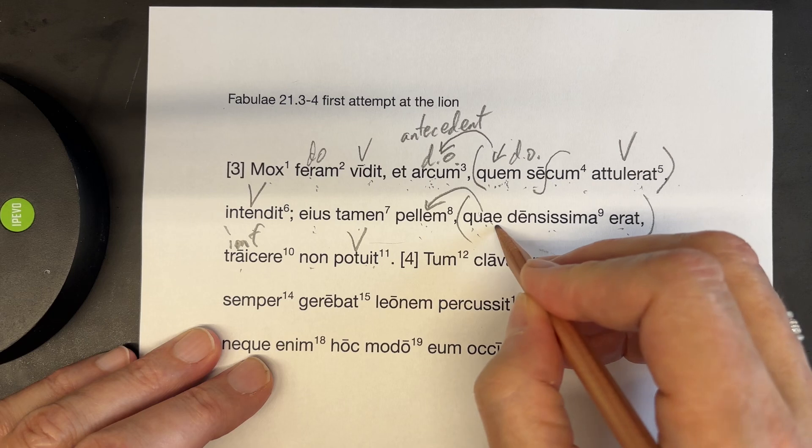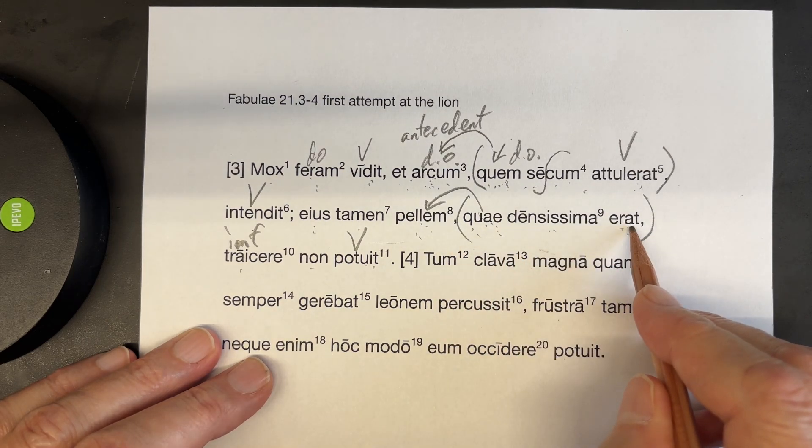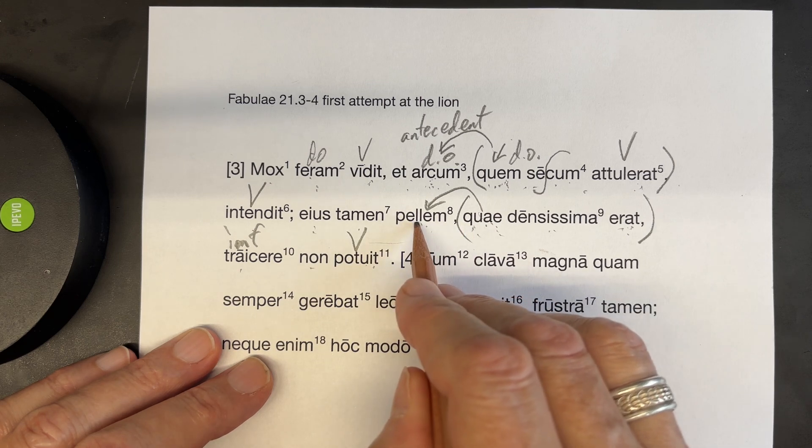So this quai is referring to the pelum here. It's feminine, singular. In its own clause, it's the subject of erat. And so it's nominative, even though this is accusative.